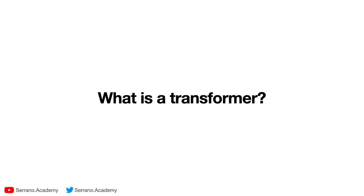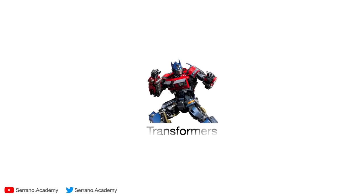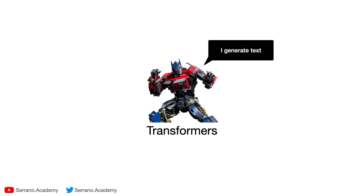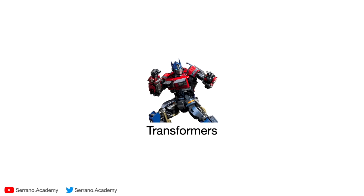So what is a transformer? It generates text — and you'll be surprised — it actually does it one word at a time. You may have seen it generate really long and elaborate responses, but it does them one word at a time. For example, if the prompt is 'hello, how are you,' it doesn't generate a full answer — it only generates the next word that would come next. The next word might be 'doing.'